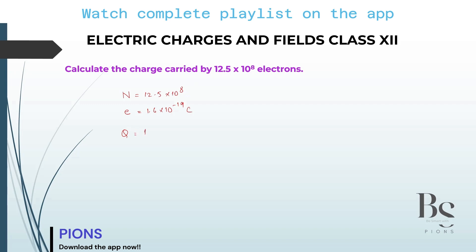We will make use of the first formula of class 12, which is Q equal to n times e. This is called quantization of charge. They can also ask you to give the quantization condition — quantization means Q equals n e, or the total charge on any object is always an integral multiple of the basic elementary charge, which is the charge of an electron. So let's multiply: 12.5 into 10 raised to 8, multiplied with 1.6 into 10 raised to minus 19.